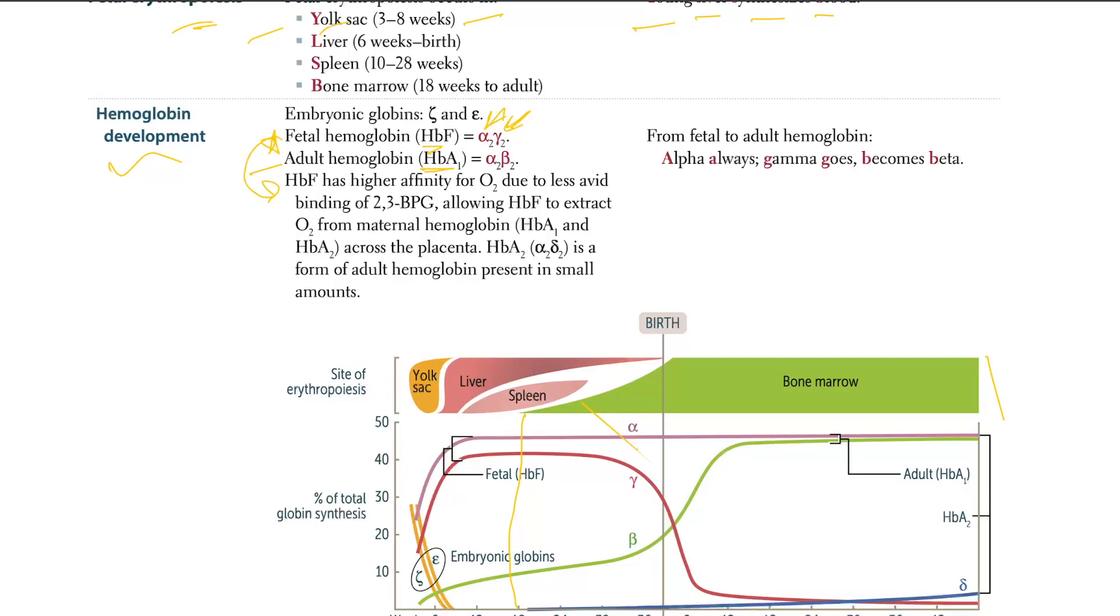HbF has a higher affinity for O2, due to less avid binding of 2,3-BPG, allowing HbF to extract O2 from maternal hemoglobin HbA1 and HbA2 across the placenta. The core yield is HbF has more affinity, so that's why when in the maternal blood, we have the HbA1 and HbA2, which contains the O2. So it's going to draw that oxygen from there to here. So you should have a very high affinity for O2 than these guys, in order for them to give you oxygen, which is HbF.